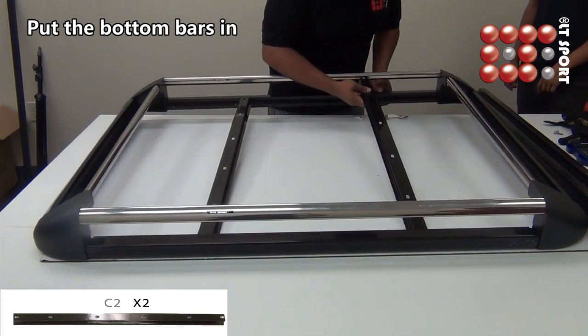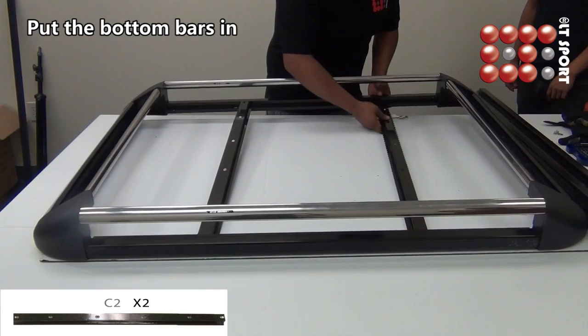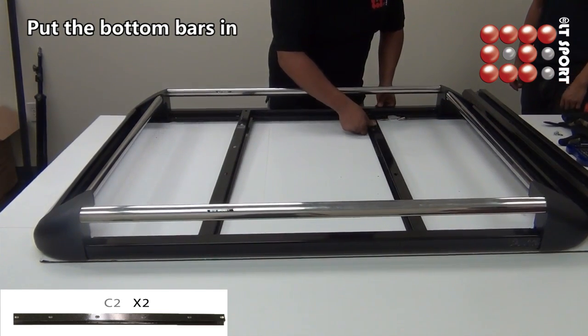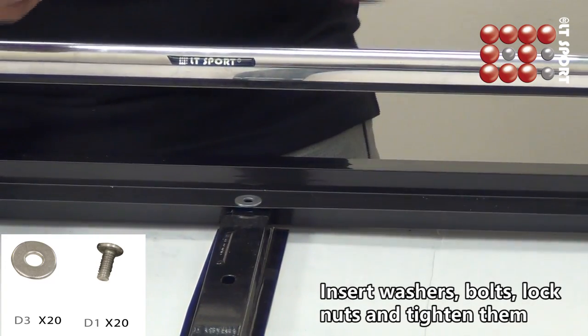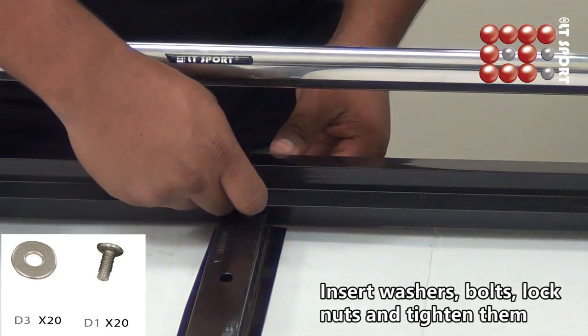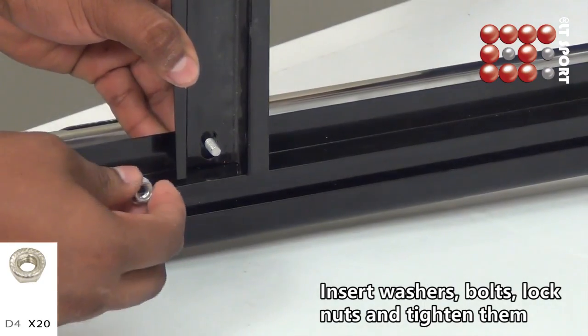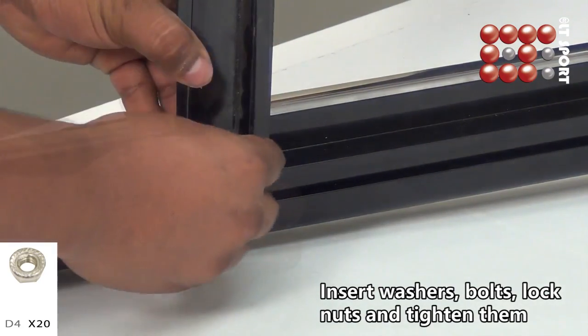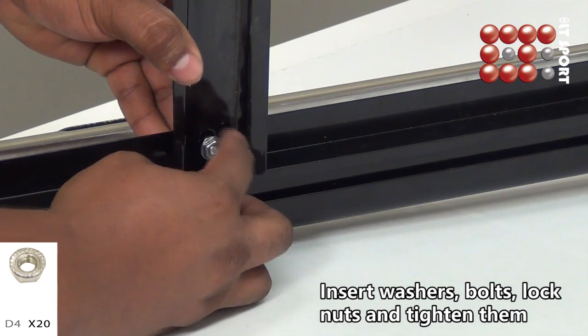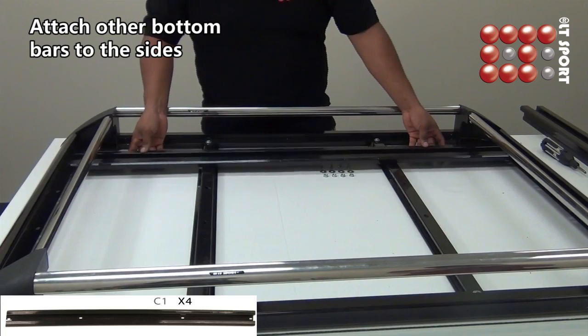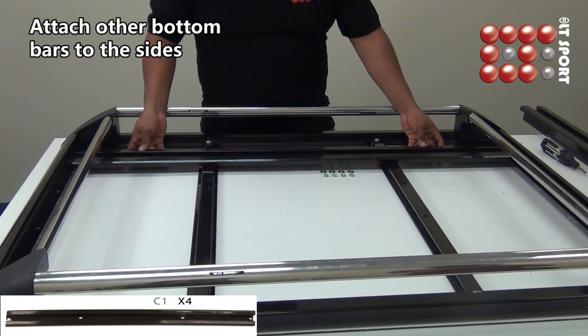Now we're moving on to part three of the assembly. First put the bottom bar in, align all the bolting points with the body of the rack. Put the washer first, then the bolts, and then lock nut on bottom. Repeat the same methods on all other parts.